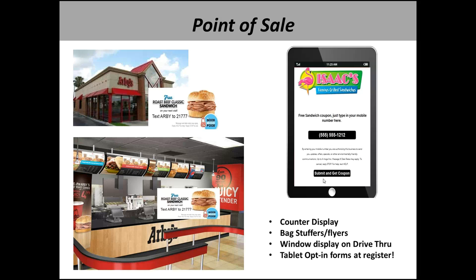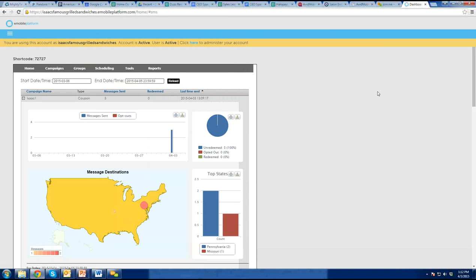One of the things we talked about was how to leverage a point-of-sale program to grow your overall loyalty database and at the same time build your mobile database. If someone walks up to the counter, makes their transaction — how do they sign up for the loyalty program? How are you promoting your current loyalty program? They're being directed to sign up online so that we can capture all the information. The program doesn't really allow us to do it right there unless we have a tablet.